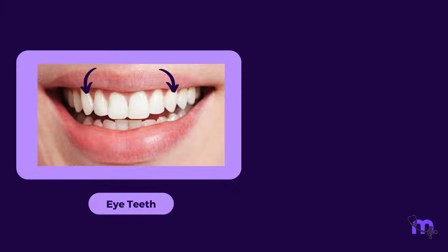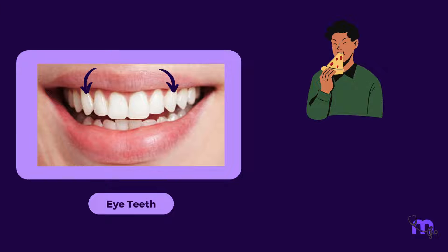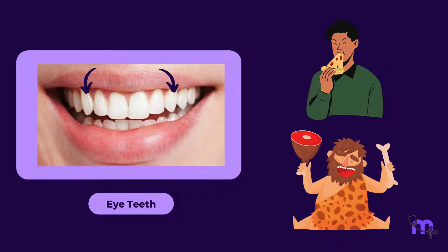This cusp is pointed and designed to tear and grasp food. Think of it like the sharp peak of a mountain that can pierce through surfaces. Canine cusps aid in tearing meat and other tougher foods, which aligns with their historical role in hunting and capturing prey.